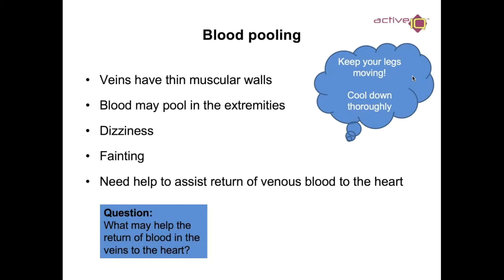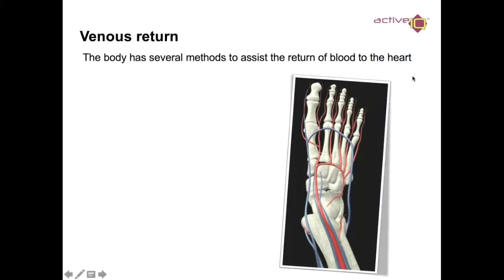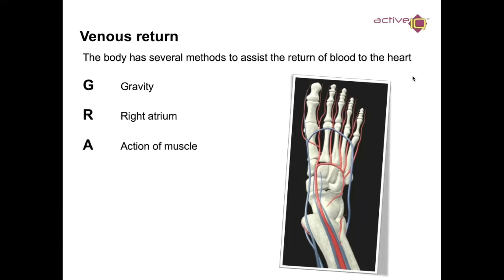What may help return blood through the veins to the heart? The body has several methods to assist the return of blood: gravity, the action of the right atrium, action of the muscles, non-return valves, the diaphragm, and peristalsis.